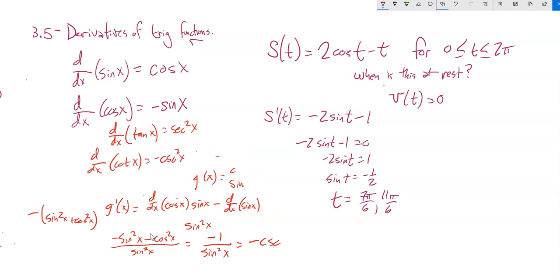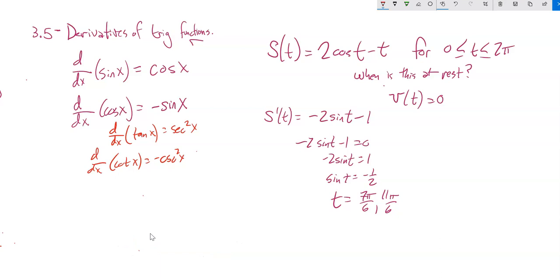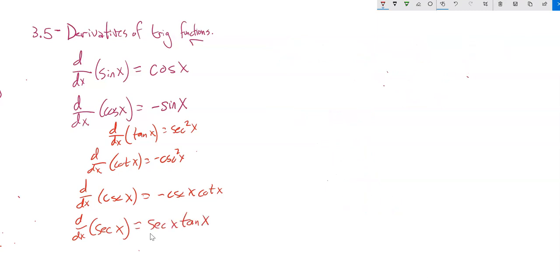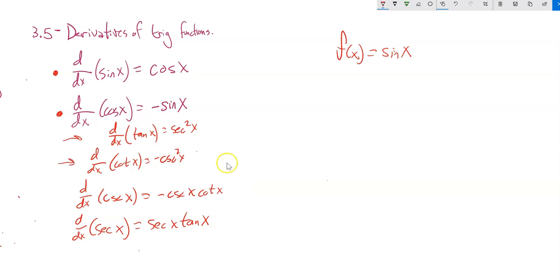Those are tangent and cotangent. We could get the derivatives of cosecant and secant the same way. These are things to know — you might want to work on memorizing them. At the very minimum you should know sine and cosine. The others should be handy and you should be able to derive them. Ideally you know them all.